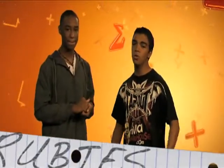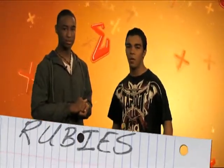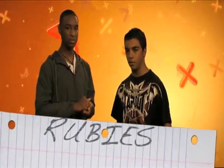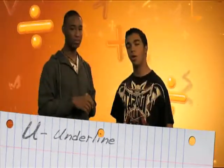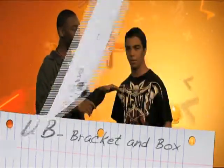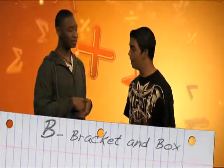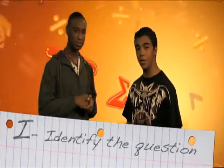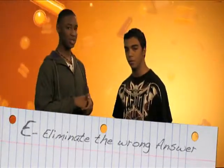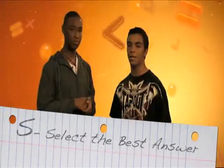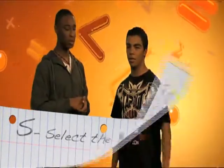So to review, use rubies during tests to help you find the correct answer. R — read and reread. U — underline. B — bracket. I — identify the question. E — eliminate wrong answers. And S — select the best answer.